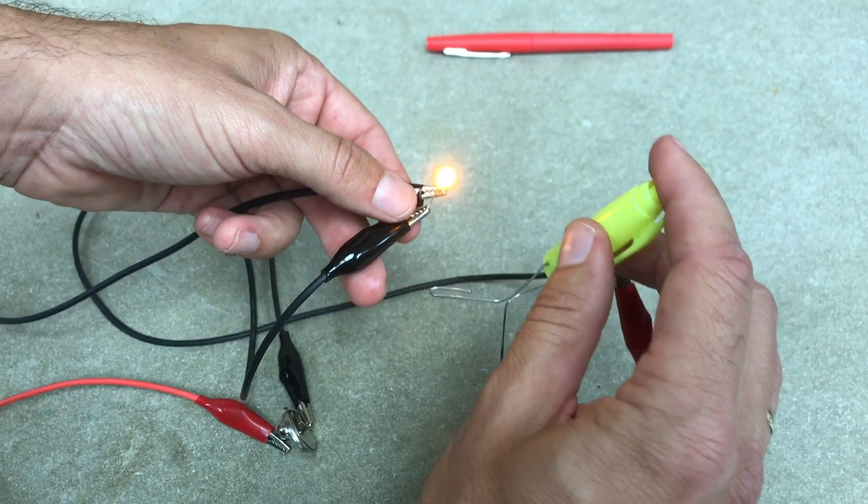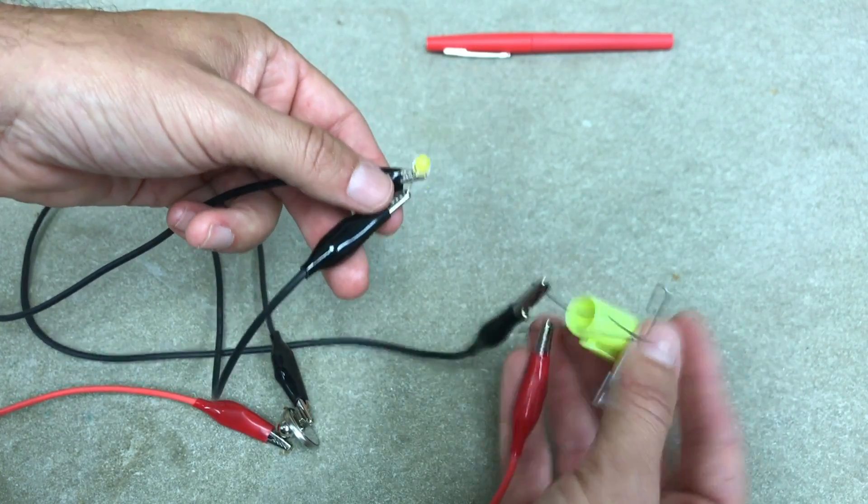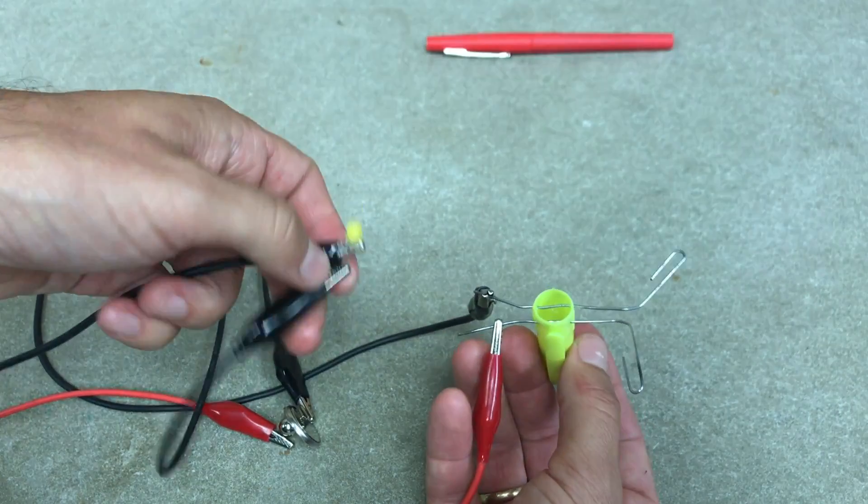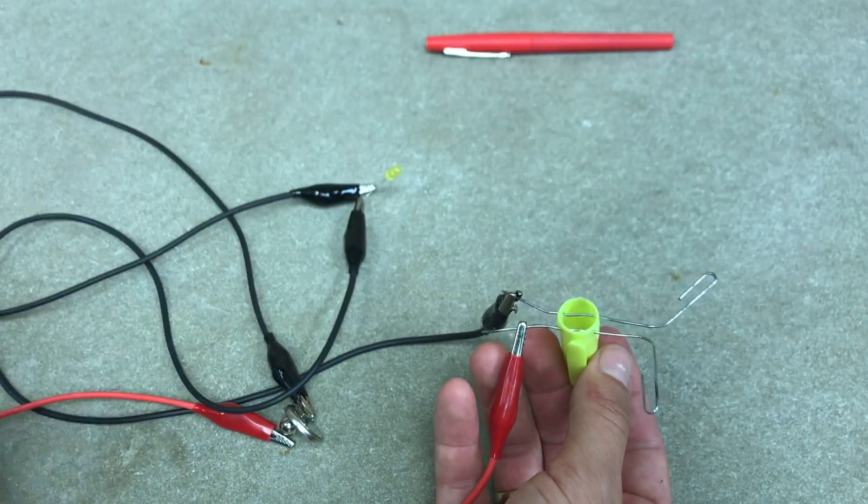It turns off. On. Off. You can't let the paper clips touch. And that is a very simple tilt switch.